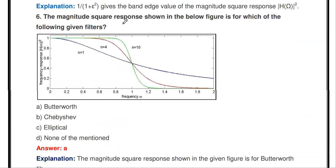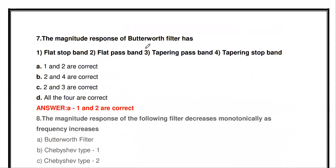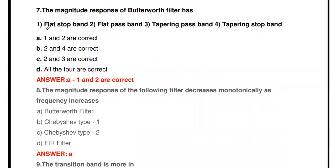The next question shows a magnitude square response diagram — |H(omega)|² versus frequency for various orders n=1, n=4, n=10. This magnitude response belongs to the Butterworth filter. The next question asks: the magnitude response of the Butterworth filter has flat stopband, flat passband, tapering passband, or tapering stopband? Looking at the response — taking the green curve for n=10 — the passband is the range of frequencies the filter allows, and the stopband is the range it blocks.